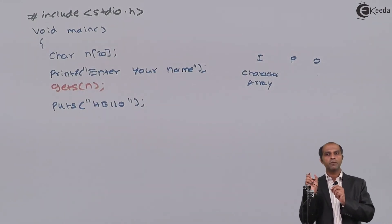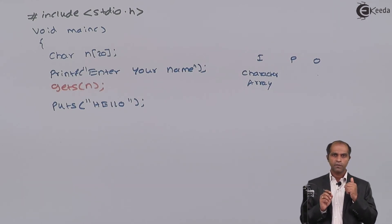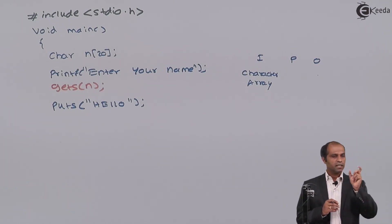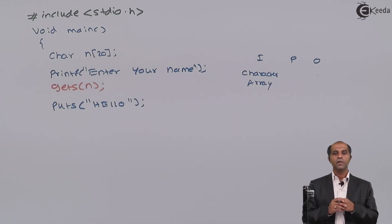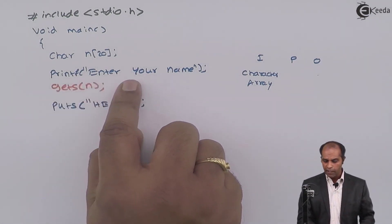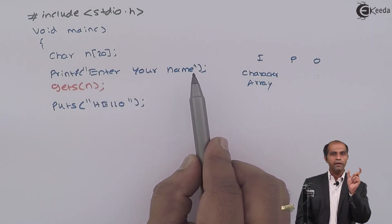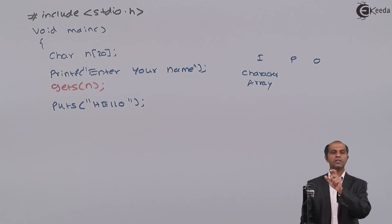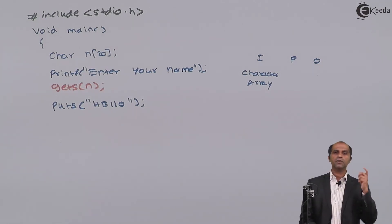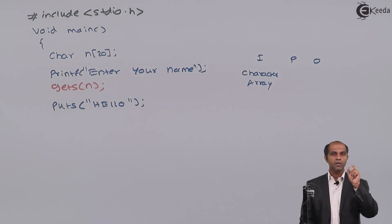To display the name with a welcome message, I can use `puts`. I'll write `puts("hello")` — this displays the word 'hello' on the screen and automatically moves the cursor to the next line, which is an advantage of `puts` over `printf`. Then I write `puts(n)` to display the contents of the array `n`. Note that if you want 'hello' and the name on the same line, you'd use `printf` instead.